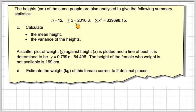So then it says the heights of the same people are also analyzed, given the following summary statistics. Here, calculate the mean height and the variance of the heights. And then we're going to use a scatter plot of the weight, y, against height, x, is plotted, and the line of best fit is determined to be y equals 0.799x minus 64.496. So x is the height here.